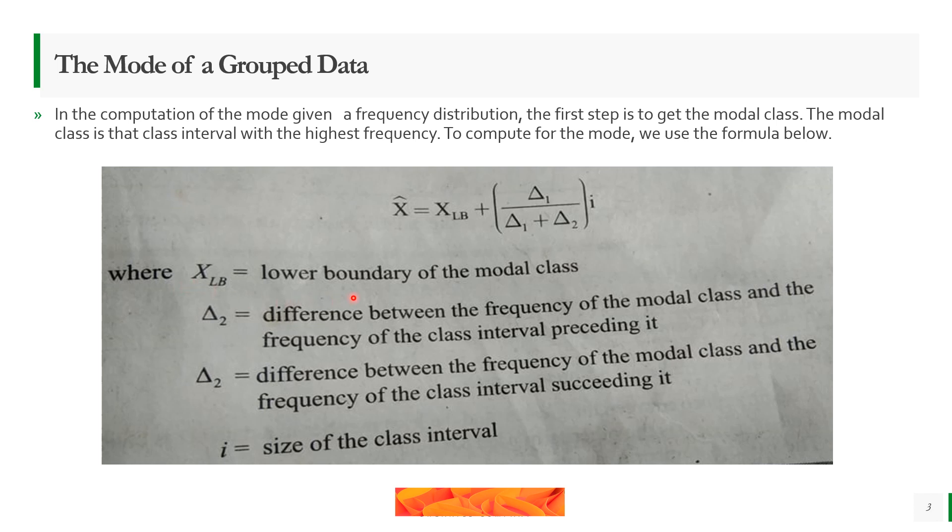The xLB is the lower boundary of the modal class. Delta 1 is the difference between the frequency of the modal class and the frequency of the class interval preceding it. Delta 2 is the difference between the frequency of the modal class and the frequency of the interval following it. And i is the size of the class interval.